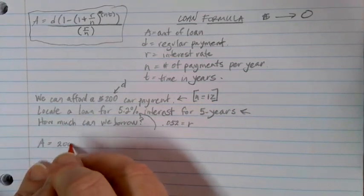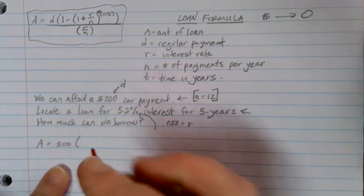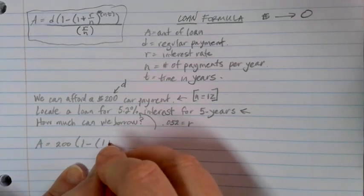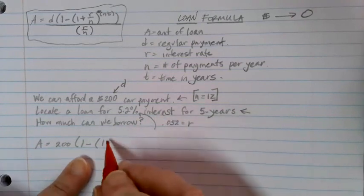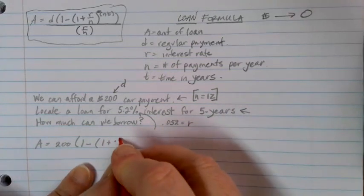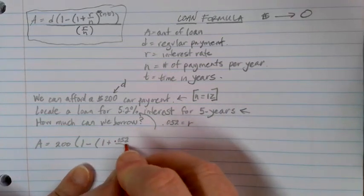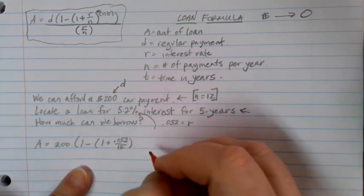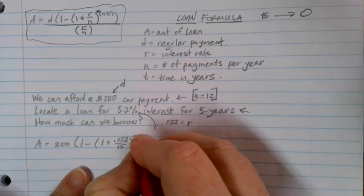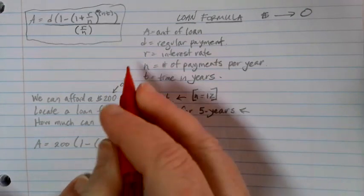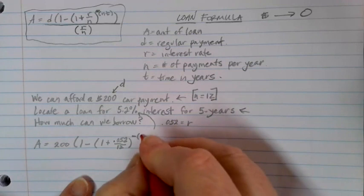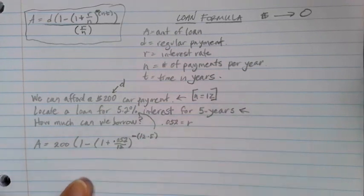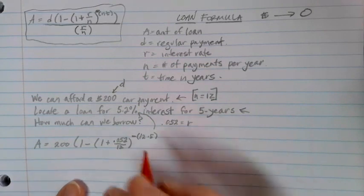Now we can fill in all the variables that we know. D is 200. This time we have a single set of parentheses because of where everything is lying. We have 1 minus another set of parentheses here with 1 plus R divided by N, so that's 0.052 for our interest rate divided by 12 because we're doing monthly payments. Now our exponent here is negative, and then we need it to be our N times T again. In this case our N is 12 because of monthly, and we're doing car payments for five years.